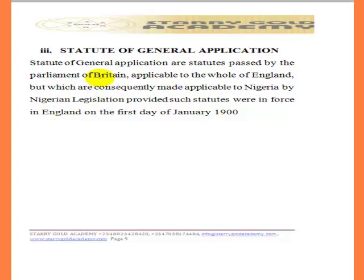The applicable date is the first day of January 1900. What that means is that all statutes of general application — especially the ones we are making use of in Nigeria today — are those passed by the Parliament of Great Britain on or before the first day of January 1900. All those passed after that date were not applied or made applicable to the Nigerian judicial system.